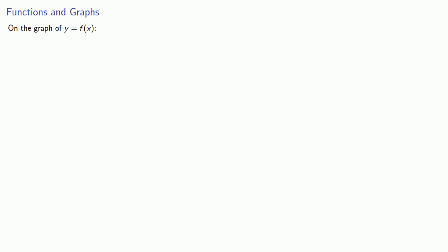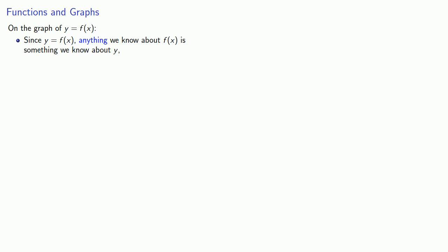A key point to remember is that on the graph of y equals f of x, because y equals f of x, anything we know about f of x is also something that we know about y. And remember, y is the vertical displacement of the point — in other words, on the graph of y equals f of x, y tells you how far above or below the horizontal axis the point on the graph is located.